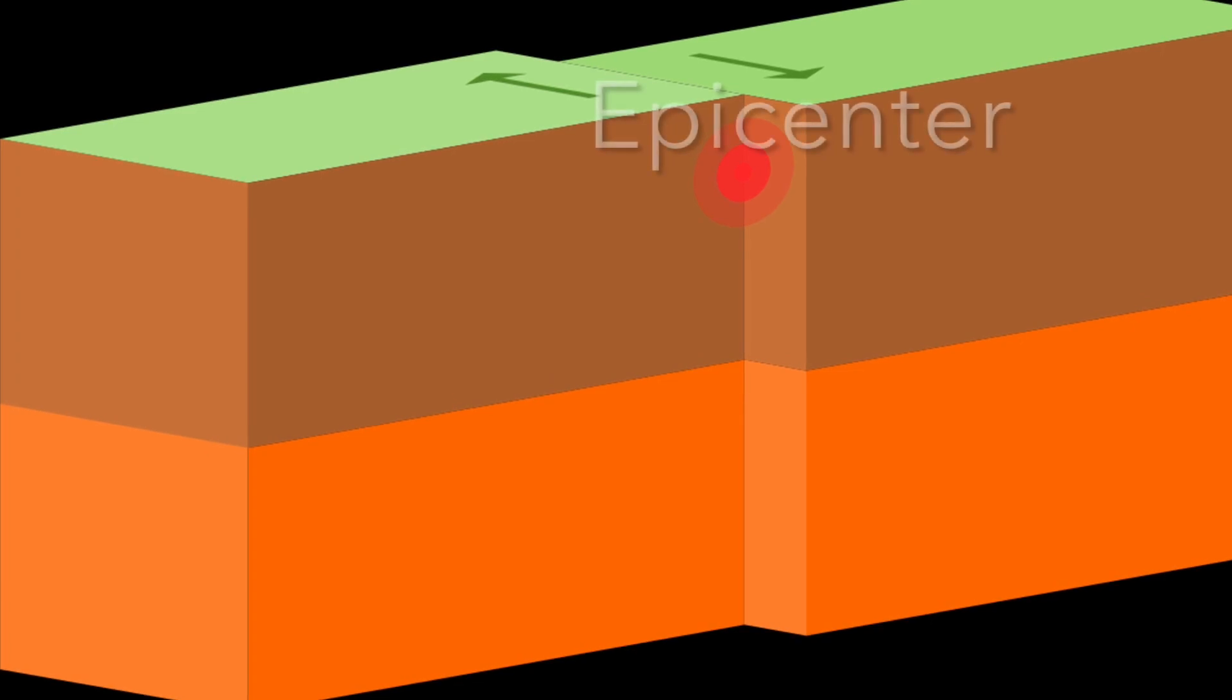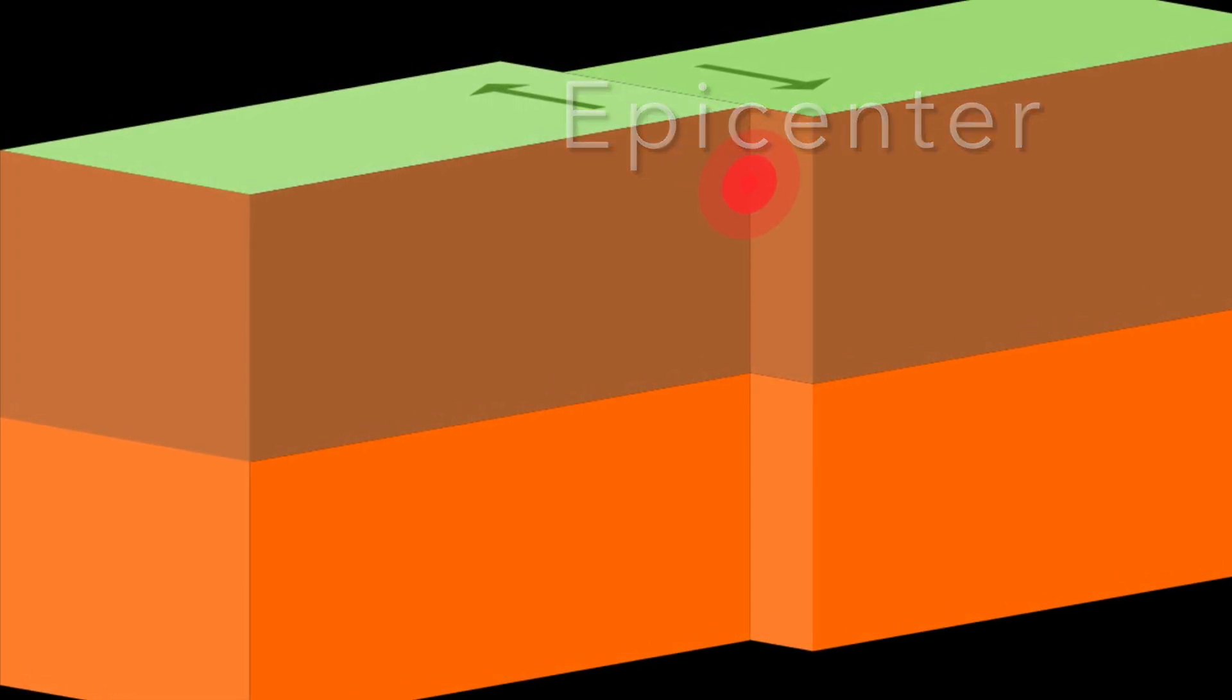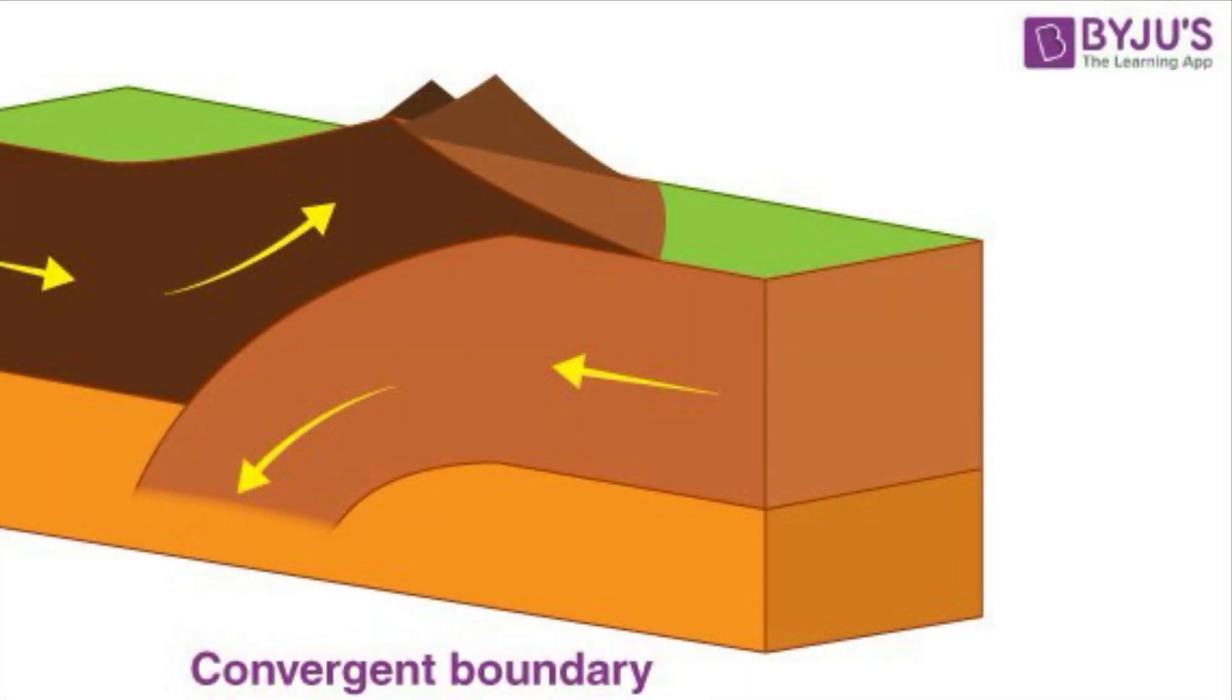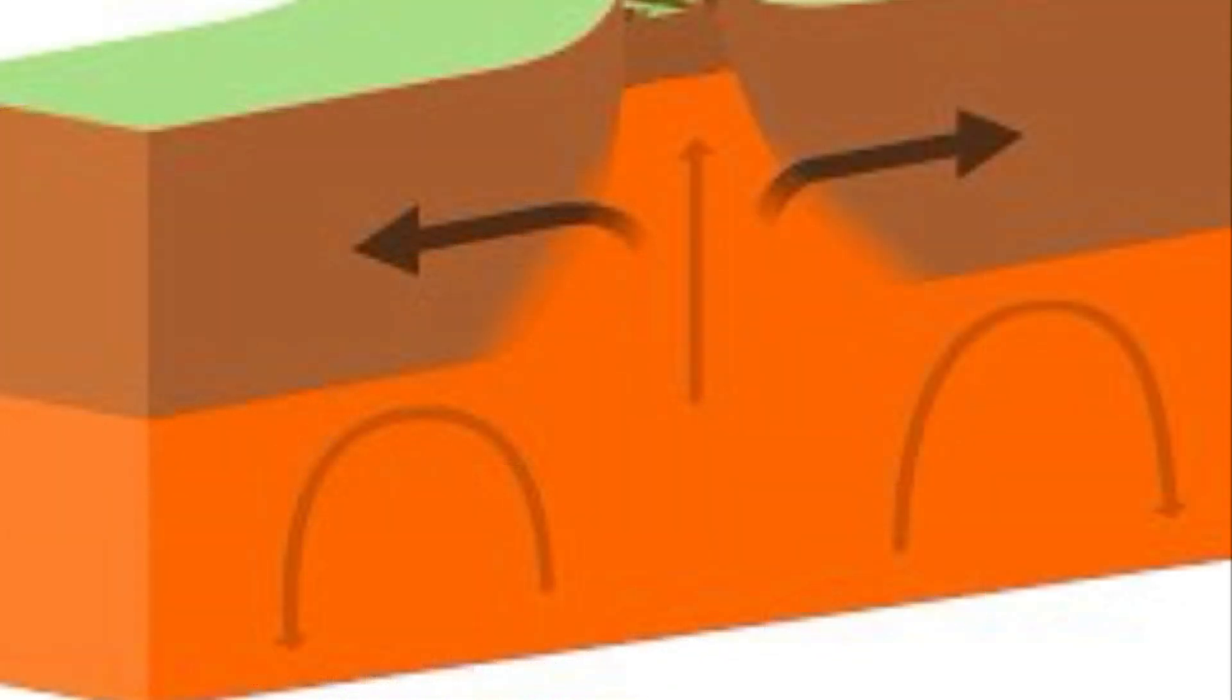There are three types of earthquake boundaries. Convergent boundary: one plate is forced over another during an earthquake, which causes a thrust fault. Many hills and mountains have been formed this way.